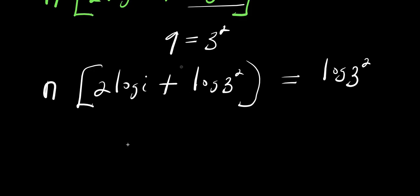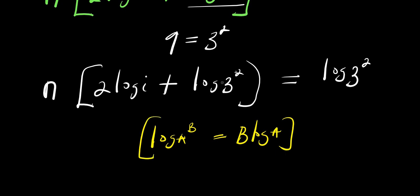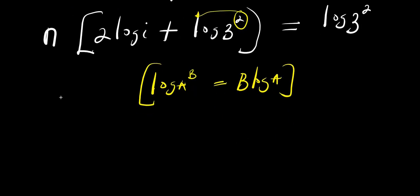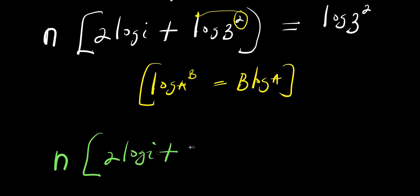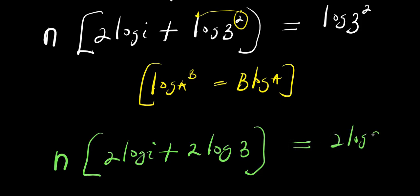We go back to the same identity: log a to the power of b equals b times log a. So the 2 also comes in front of log 3. We would simply have n times 2 times log i plus 2 times log 3, equals 2 times log 3.